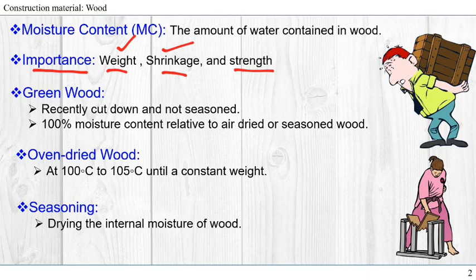The first one is green wood. Green wood is a recently cut down wooden piece or tree that has not yet been seasoned or dried. We may assume that it has 100% moisture content relative to air dried or seasoned wood. We can assume that all the fibers are saturated and it may also have water in the cell cavities.